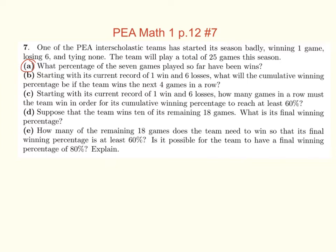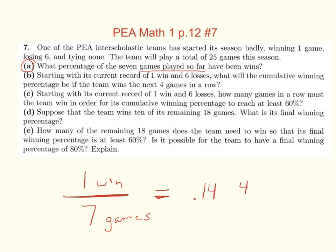What percentage of the seven games played so far have been wins? So you would just take one win, divide it by — and be careful, they lost six — but you want to take it out of the games played so far. So one out of seven games to get their winning percentage, which is about 14%. So it's 0.14 or 14% winning percentage.